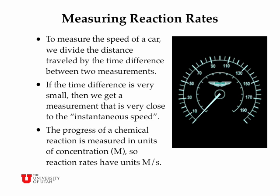To measure the speed of a car, what we do is we divide the distance traveled in miles or kilometers by the time difference between the two measurements. And if the time difference of those measurements gets very small, then we get a measurement that's very close to the instantaneous speed. So instead of saying I went 400 miles in three days, which would be sort of an overall global average of speed, I can say I'm going 45 miles per hour. Now the progress of a chemical reaction is not measured in miles or kilometers, but in concentration, in moles per liter. So the reaction rates have units of moles per liter per second. That's how we measure the progress or the rate of a chemical reaction.